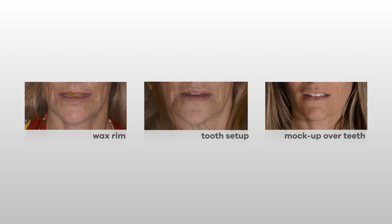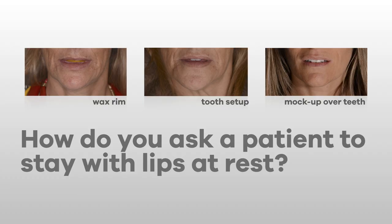The evaluation of a proposed new incisal edge position for a specific patient can be done on wax rims if it is an edentulous patient, or with direct or indirect mockups, or tooth setups — whether we are talking about full dentures, composite restorations, or veneers. We need to find a strategy so that we can evaluate that new incisal edge position. Asking a patient to go to the position where we can evaluate the incisal edge at rest may seem easy, but it's not that straightforward, because patients in the dental office become nervous and the upper lip is rarely in a relaxed position.